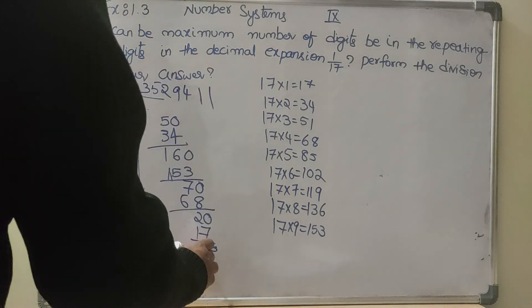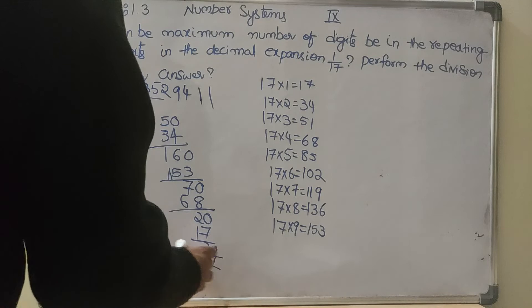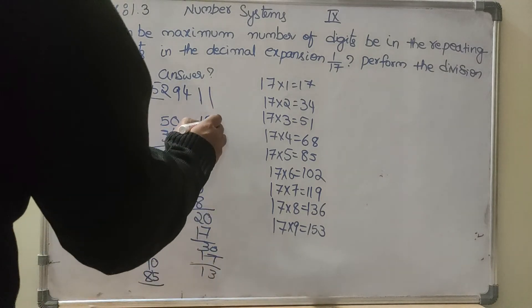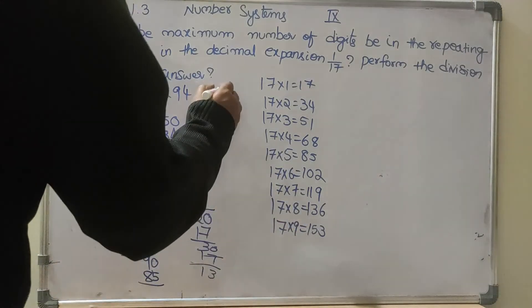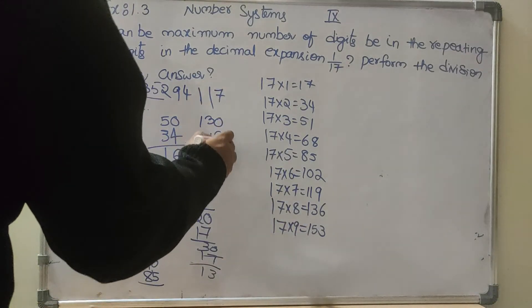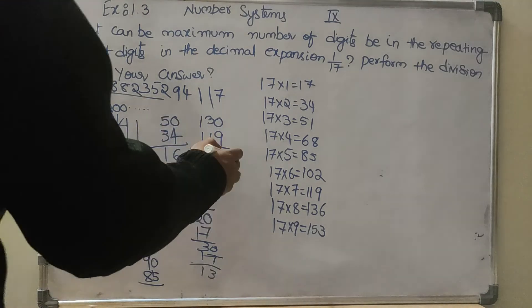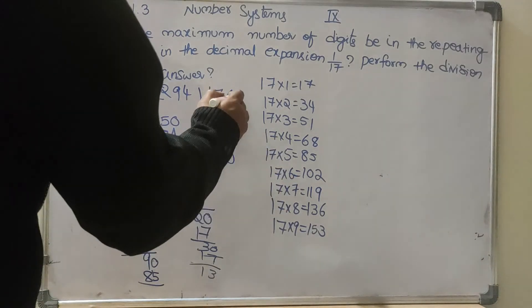17's are 17, 13, 0 comes here, so 7 times, 119. 10 minus 9 is 1, 11 is the remainder. 0 comes here, so 6 times, 102, 8 is the remainder.